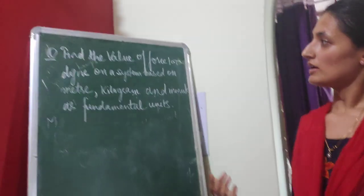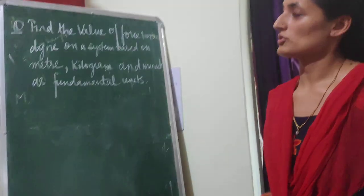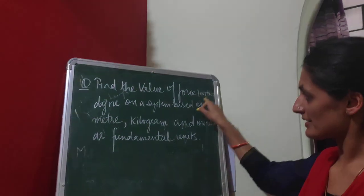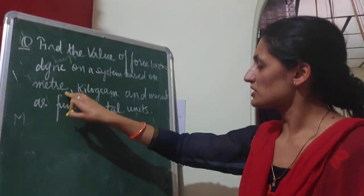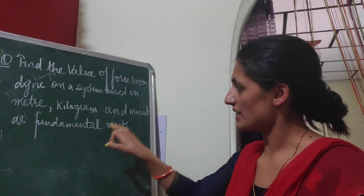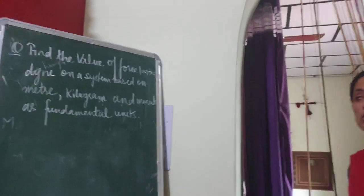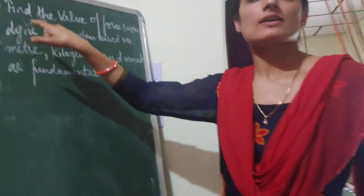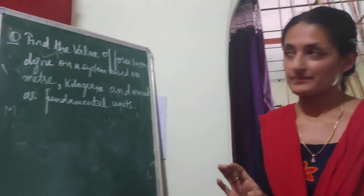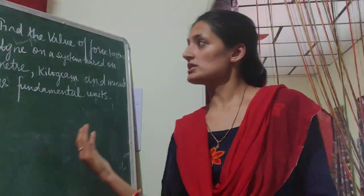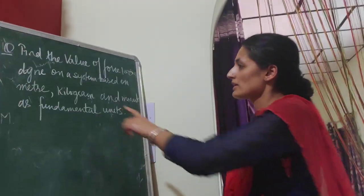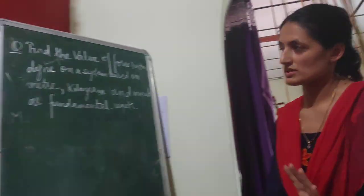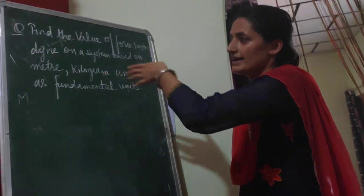I am going to do a question on conversion of units. The question is: find the value of force 100 dyne on a system based on meter, kilogram, and minute as fundamental units. You have to convert force that is 100 dyne. Dyne is a unit of force in the CGS system, which means you are going to convert from the CGS system into a new system of units where meter, kilogram, and minute are the fundamental units.